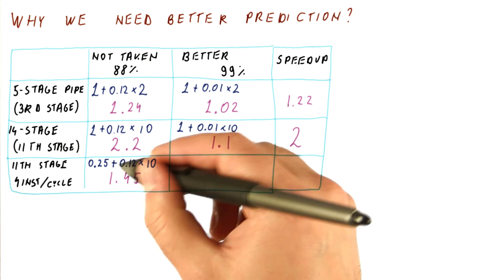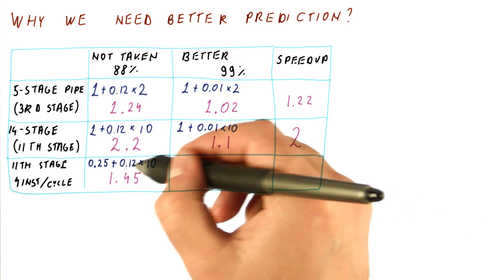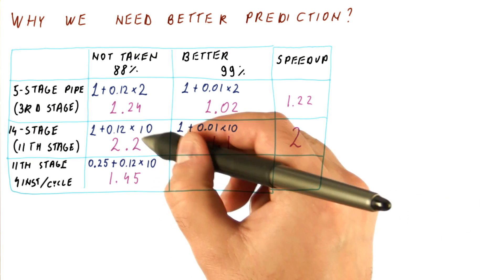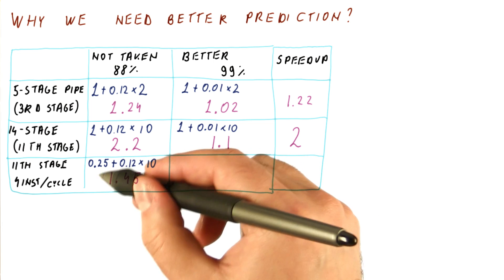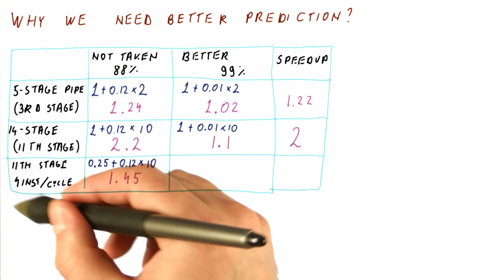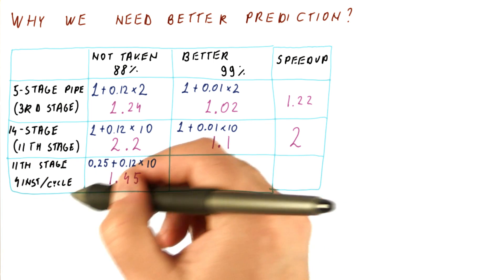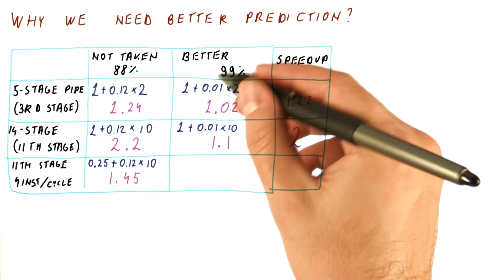That's actually less than one instruction per cycle. It's better than a single instruction per cycle processor, but not that much better for something that should be four times as capable.